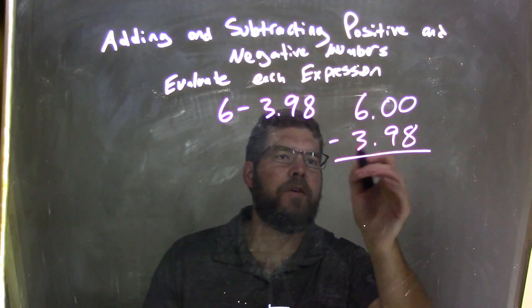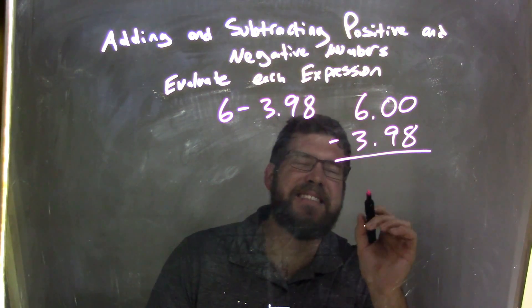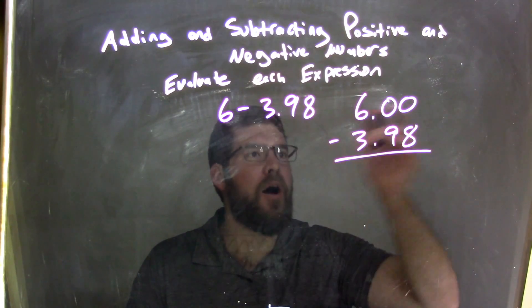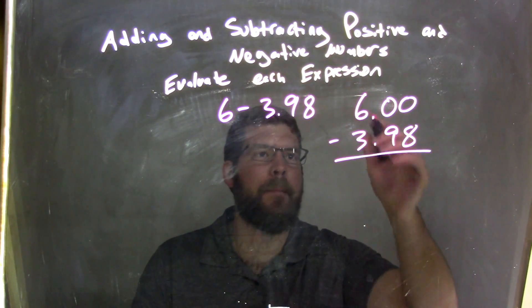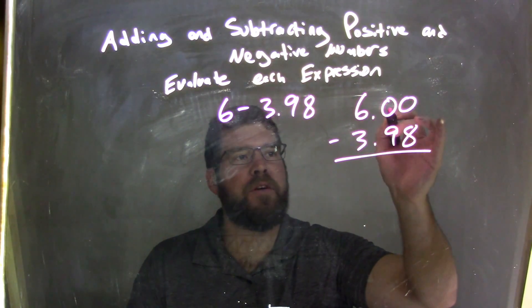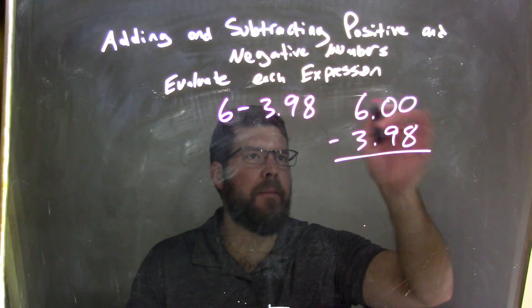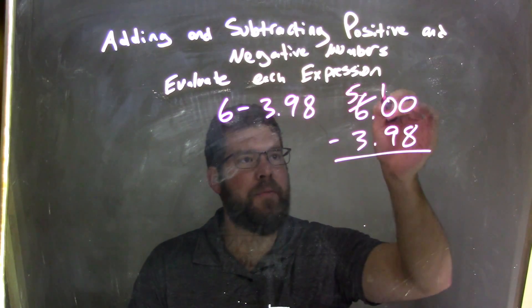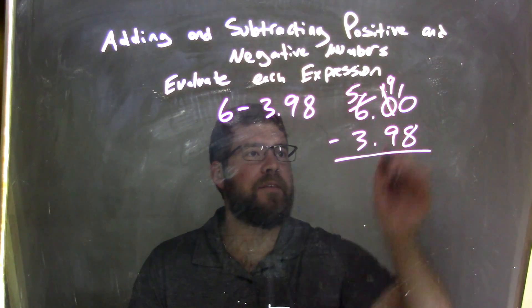Now for 6.00 minus 3.98, we subtract first. 0 minus 8, I can't do that. I can't borrow from that 0, there's nothing there. So I borrow from the 6, make it a 5, make this a 10. Now I can borrow from the 10, make that a 9, make this a 10.